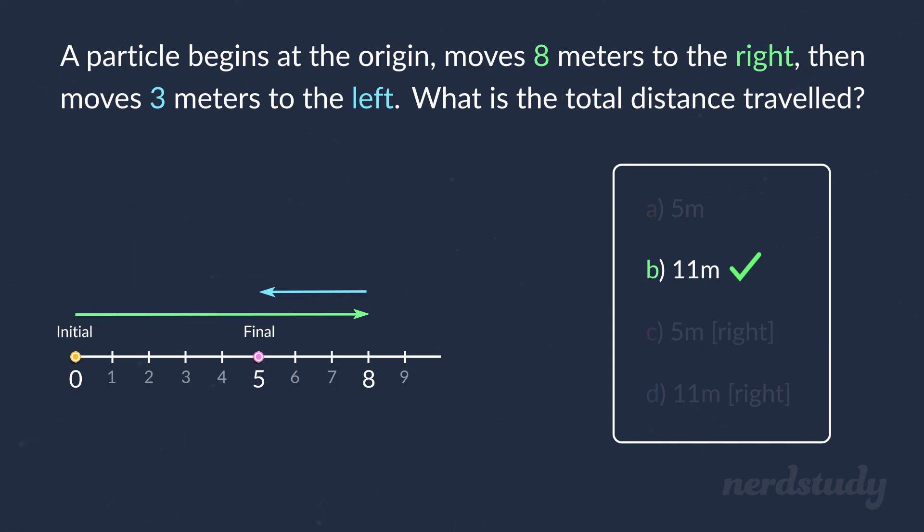When we want to find the total distance, we have to consider both the movement to the right and the movement to the left in our calculation. So, here we would just do eight plus three, giving us a total distance of 11 meters.